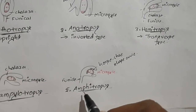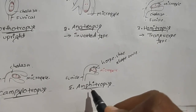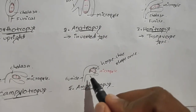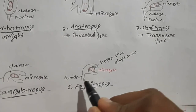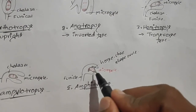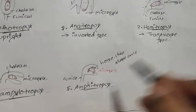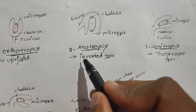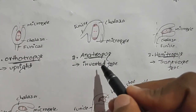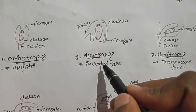The fifth type is amphitropous. This is similar to campylotropous in that the ovule is bent more than 90 degrees to the funicle, but in amphitropous the ovule is horse-shoe shaped. The presence of anatropous ovules is the characteristic feature and the most common type in angiosperms.